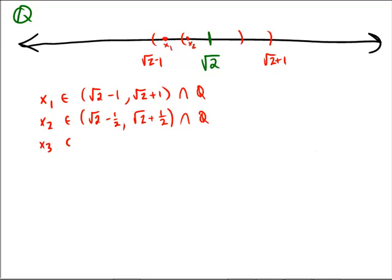Now where is x3 going to come from? Well, x3 is going to come from rad 2 minus 1 third, comma, rad 2 plus 1 third intersected with Q, so it's going to be shortened up a little bit more, maybe like this, and just for fun let's take x3 so it's on the other side, so you can see why it doesn't even matter where it's coming from.